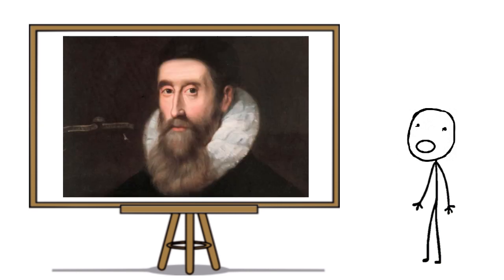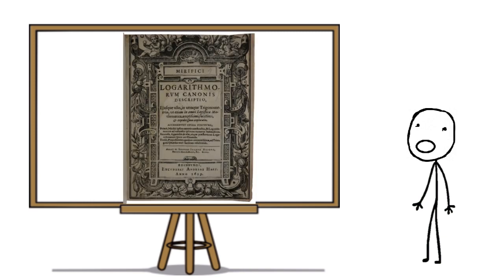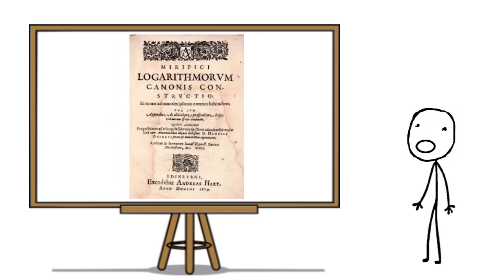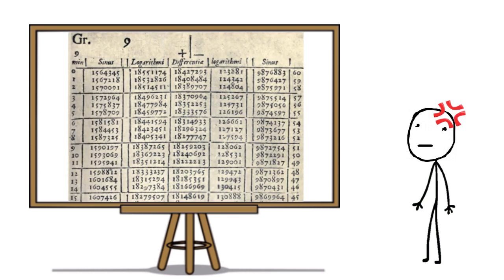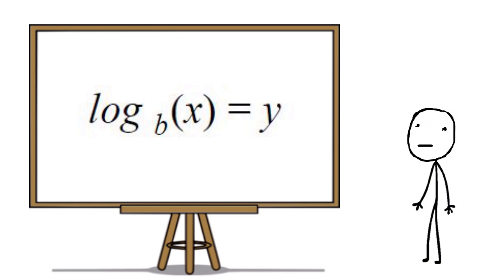John Napier began working on logarithms in 1594. In 1614, he published the Mirifici Logarithmorum Canonis Descriptio, also known as the Description of the Marvelous Canon of Logarithms. Two years after his death, the Mirifici Logarithmorum Canonis Constructio, also known as the Construction of the Marvelous Canon of Logarithms, was published. These two treatises outlined the steps leading to the invention of the logarithm, which were meant to simplify calculations.